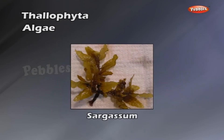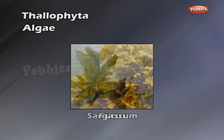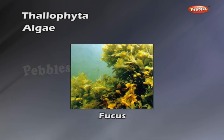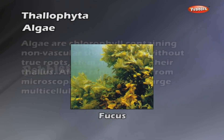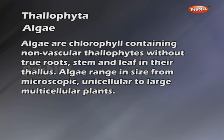The examples of algae are Sargassum and Fucus. Algae are chlorophyll-containing nonvascular thallophytes without true roots, stem and leaf in their thallus.